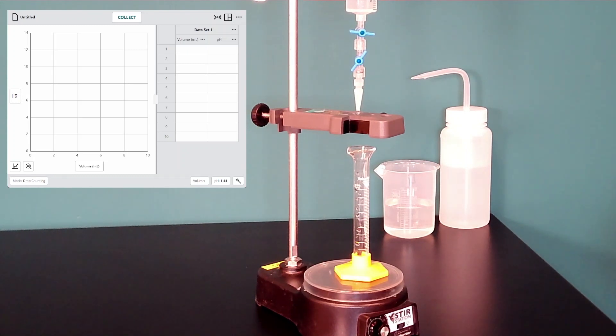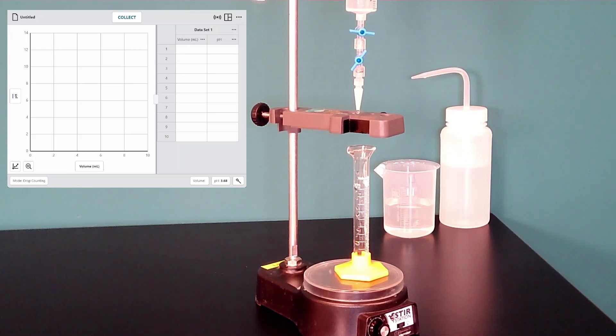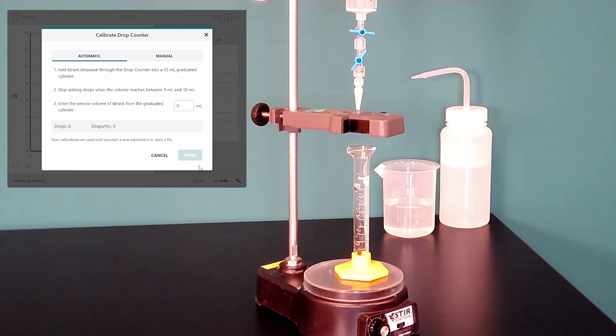To begin the calibration for the drop counter in the graphical analysis software, I want to click on the sensor actions tab here for volume. Then I can calibrate the drop counter and all the instructions are written out here.